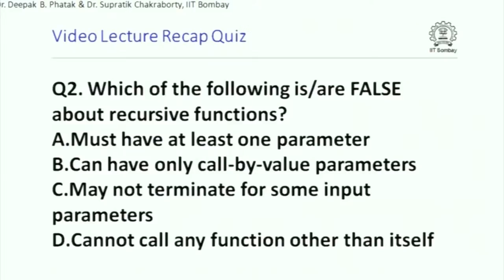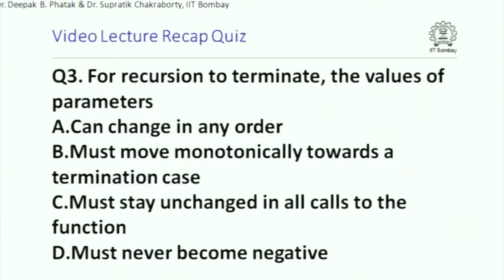There could be multiple choices. Which are false? A) must have at least one parameter, B) can have only call-by-value parameters, C) may not terminate for some input parameters, D) cannot call any function other than itself. For recursion to terminate, the value of parameters must move monotonically towards a termination case, stay unchanged, or never become negative.